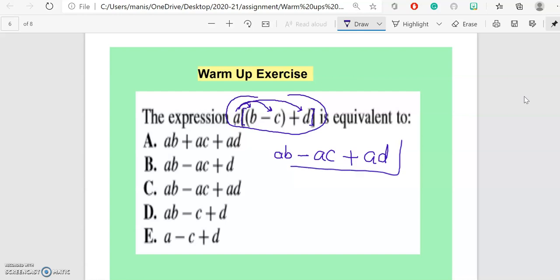So this is my answer over here. Now I have to go back and check which matches with my choice. This is ab plus - we do not have plus here, so this choice cannot be the correct answer. ab - ac + d? No, because this one is having d but we have ad in our answer.